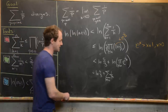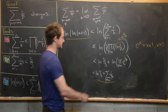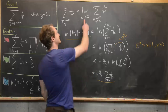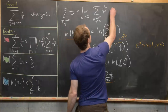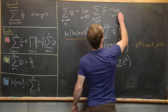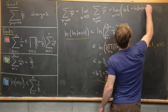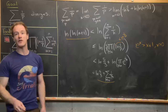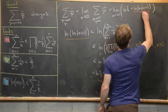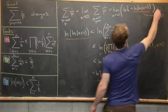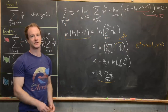Looking at the extreme ends of the inequality, we can rearrange to get: the limit as n → ∞ of the sum over primes p ≤ n of 1/p is greater than the limit as n → ∞ of [−ln(5/3) + ln(ln(n+1))]. As n → ∞, ln(ln(n+1)) → ∞, so this limit is infinity. Therefore the sum of reciprocals of primes diverges.